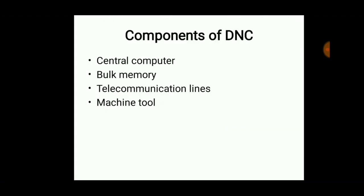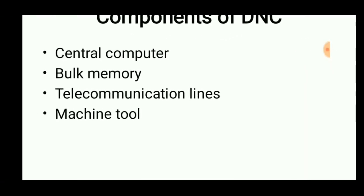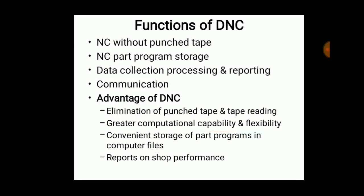What are the components of DNC? First, a central computer used to control the set of instructions and bulk memory for the storage of instructions. Telecommunications lines for communication between the subsystems or subcomputers, machines, and the central computer. Then machine tools such as drilling, milling, reaming, boring, lathe, etc.